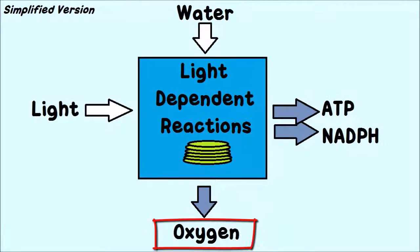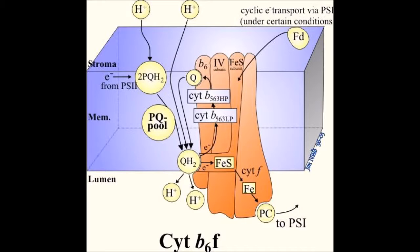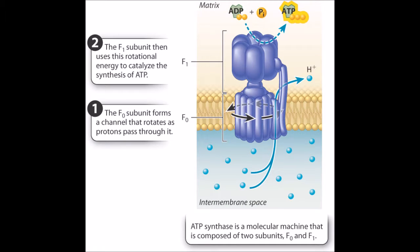The protons in the electrochemical gradient look to flow to an area of low concentration. With the help of ATP synthase, the energized protons are used to convert ADP to ATP.